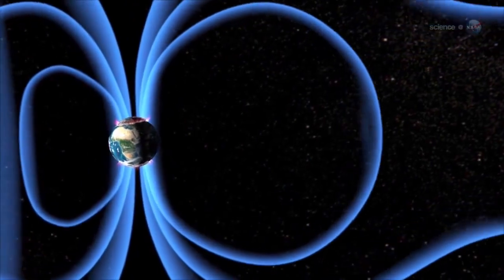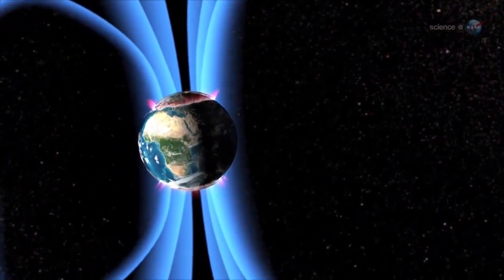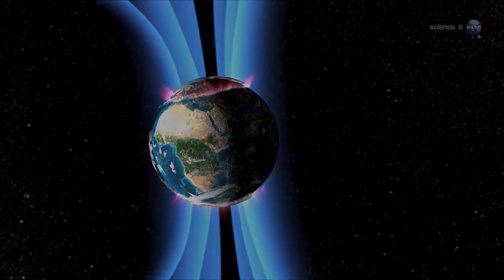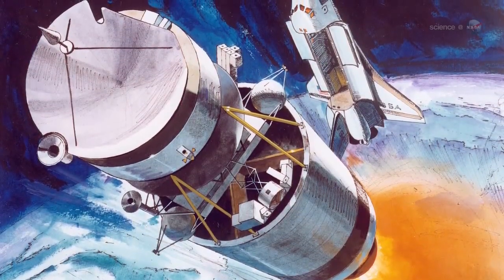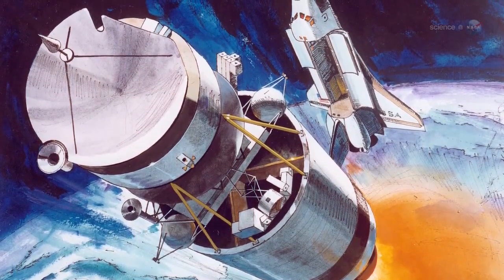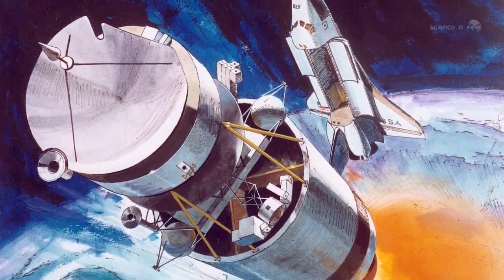To learn how to pinpoint these events, Scudder looked at data from a space probe that orbited Earth more than 10 years ago. In the late 1990s, NASA's Polar spacecraft spent years in Earth's magnetosphere, explained Scudder, and it encountered many X-points during its mission.